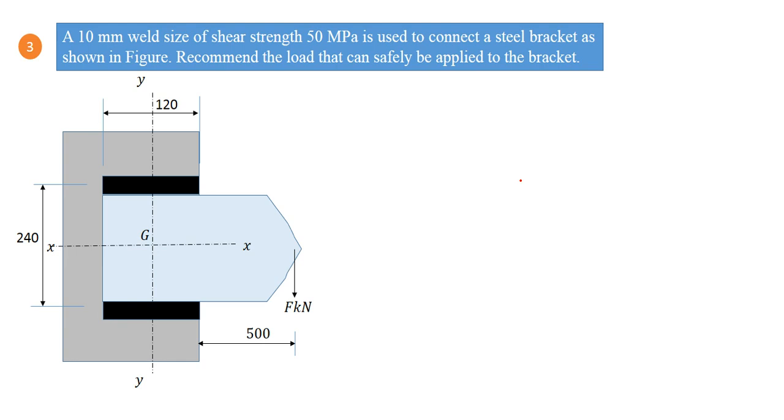We have simply changed two things. It is similar to problem number one. The only difference is that here F is unknown and there F was known and we were to calculate the weld size. Here weld size is given. It means H is given. X bar, y bar, they are obvious—60 mm and 120 mm, because it is symmetrical about x axis, y axis.